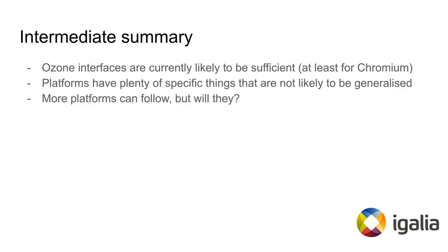To summarize all the above: at this moment, Ozone is likely to be sufficient for what Chromium needs, and is proven to work, because two quite distinct implementations have fit into it. At the same time, we have found quite a few platform-specific things that require special logic — just take a look at the platform properties subclass of OzonePlatform. Finally, what about other platforms — Windows, macOS? The short answer is we are moderately optimistic about the possibility, but not about seeing that soon.